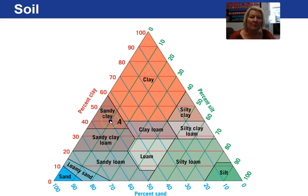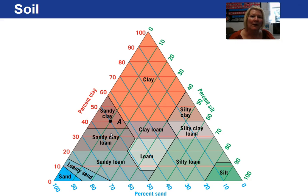So with 50% sand, 40% clay, and 10% silt, we would call the soil a sandy clay. That's how you plot on a ternary diagram.